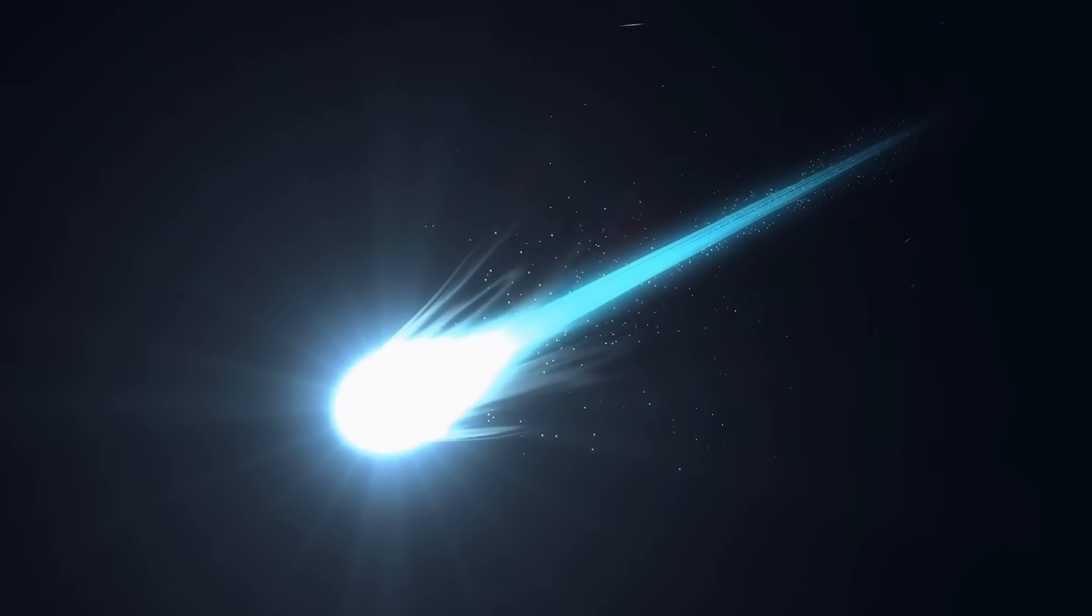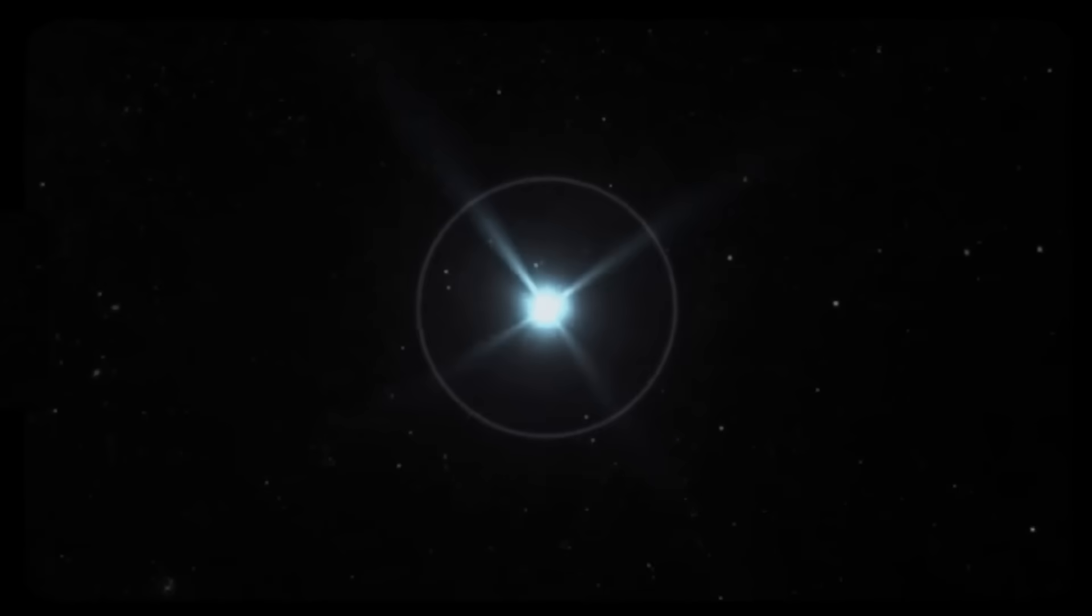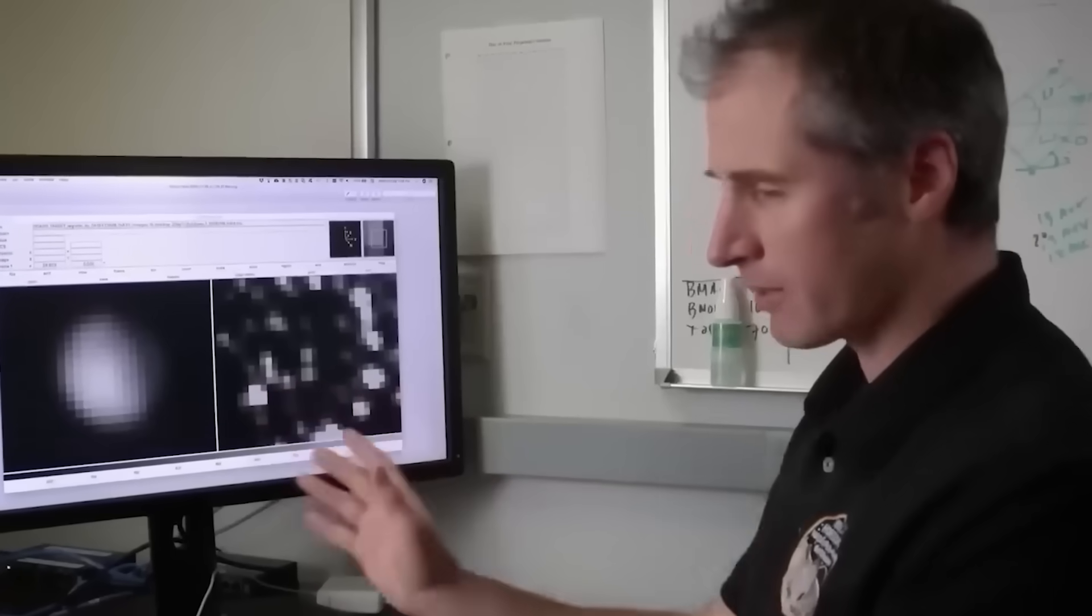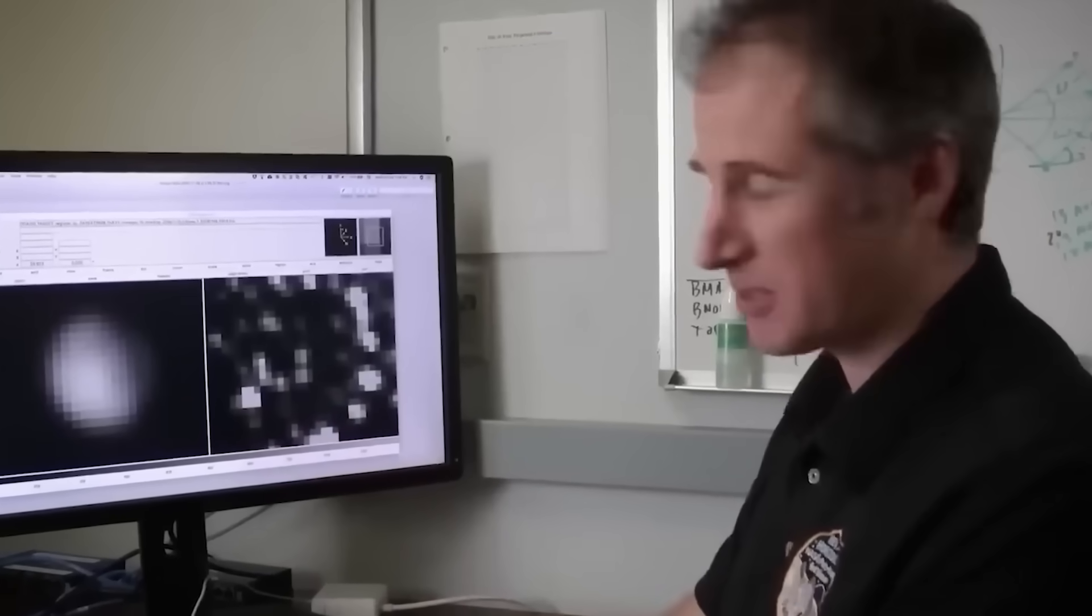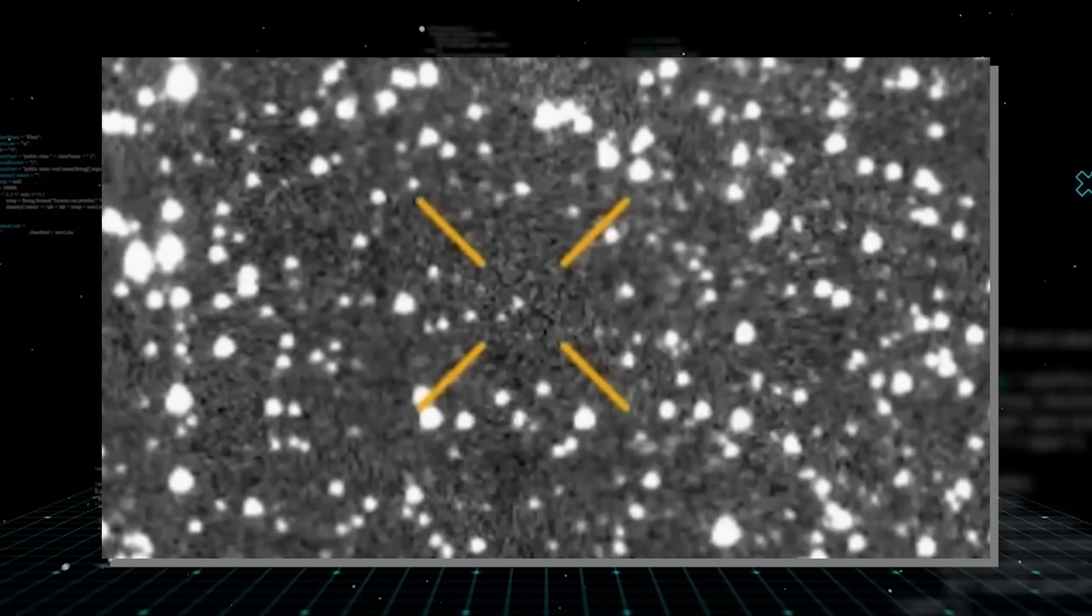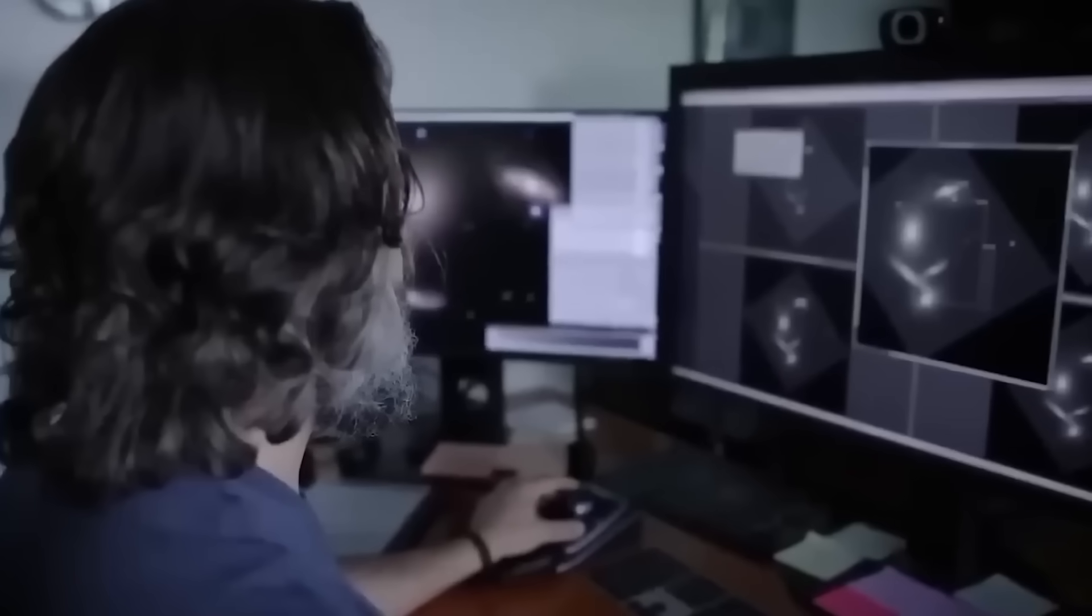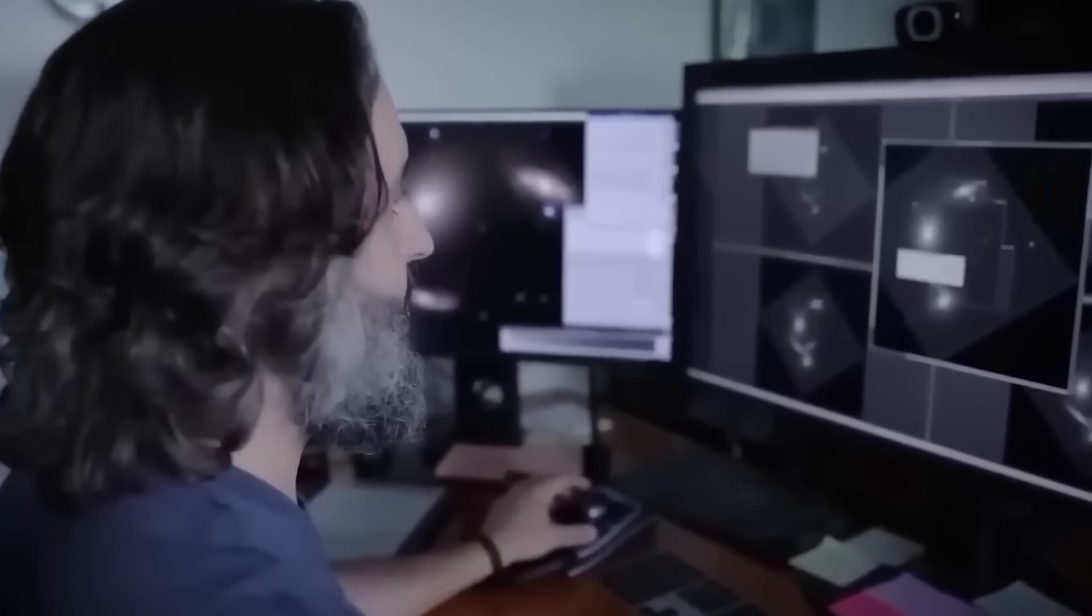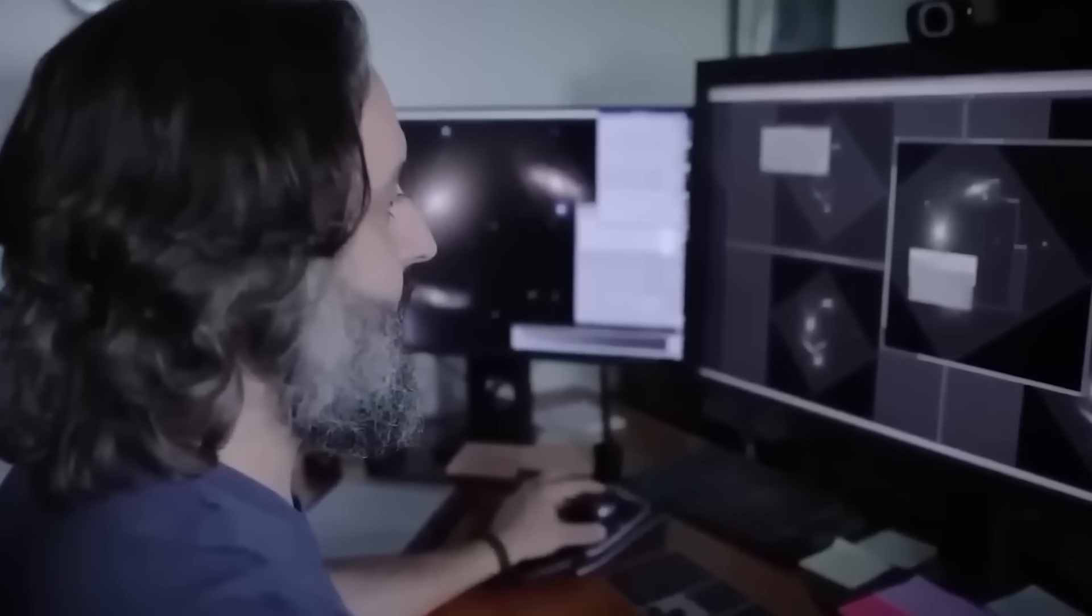This particular object, initially catalogued as 3I Atlas, seemed at first glance like many other comets, icy fragments that journey through our solar system, occasionally gracing us with a glowing tail. Many people are crazy about spotting new comets, but not all things are what they seem, and this one was different, truly different. For a time, astronomers simply placed 3I Atlas into that familiar category.